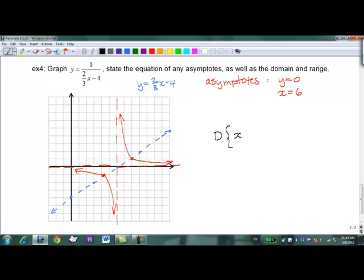So domain and range. Again, x, given that x can't equal, we found out that it's 6. And in this case, the range, y, given that y can't equal 0.